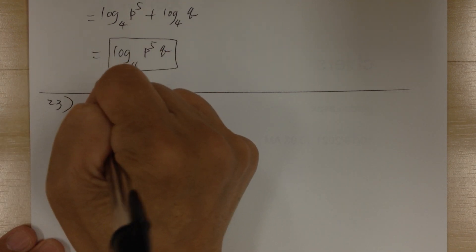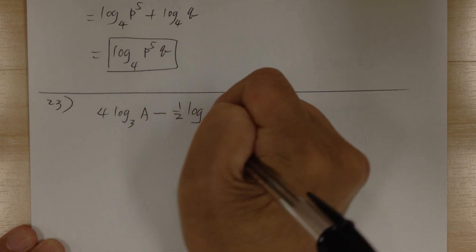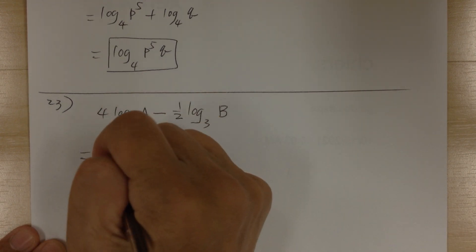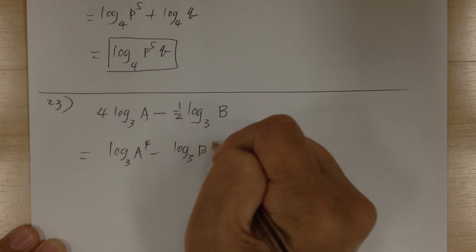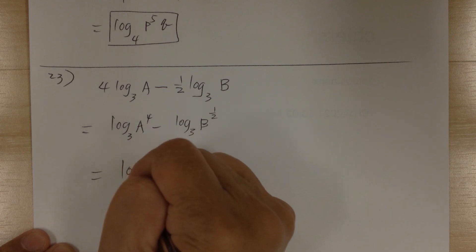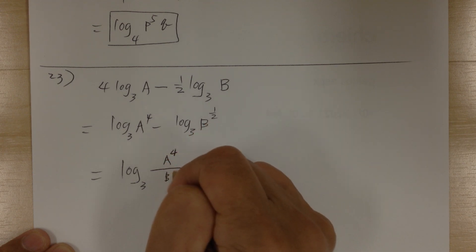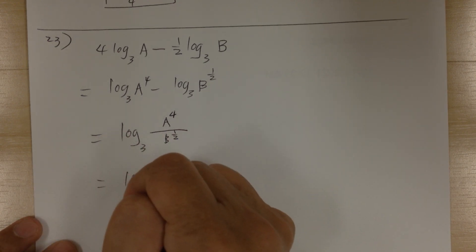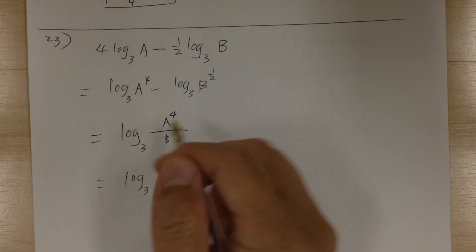Next: 4 log base 3 of A minus 1 half log base 3 of B. You can first apply the third log to bring the numbers inside, then combine them. The subtraction becomes division: A to the 4 over B to the 1 half. You can rewrite B to the 1 half as the square root of B, giving log base 3 of A to the 4 over square root of B.